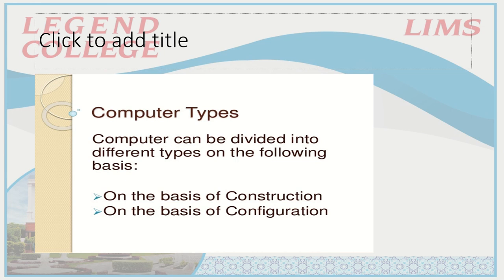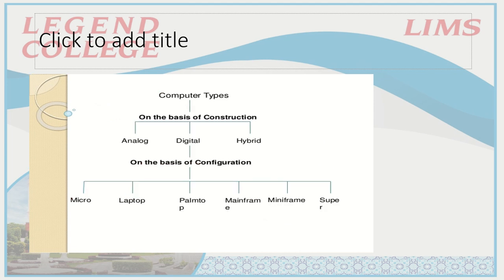Computers can be divided into different types on the following basis: on the basis of construction, and on the basis of configuration. On the basis of construction, we have three categories: analog computers, digital computers, and hybrid computers.